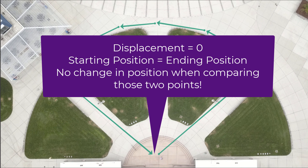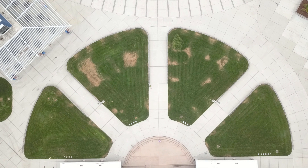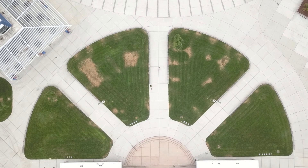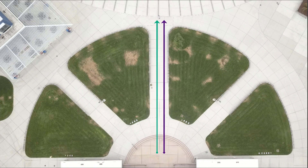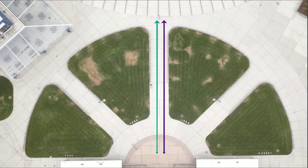My starting position is also my ending position, so there is no change in position when comparing those two points. Think about it — our displacement is always zero if we compare our positions from when we wake up to when we go to sleep, because you probably end up back in bed. Now, is it possible for distance to equal displacement? When I walk from the center of the quad to the top of the quad in a straight line, the distance I traveled is equal to my displacement from the origin. So yes, in this case, displacement equals distance.